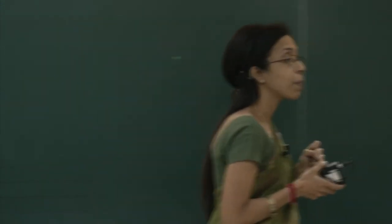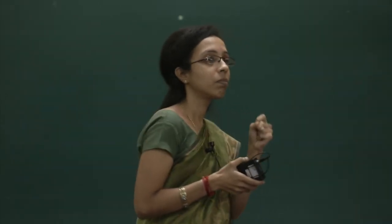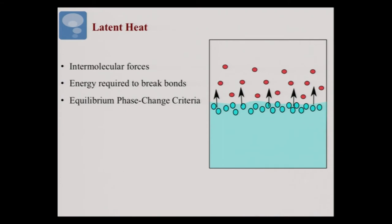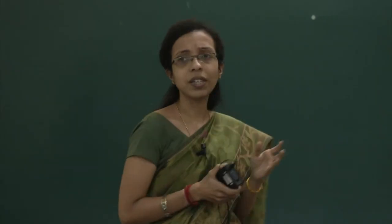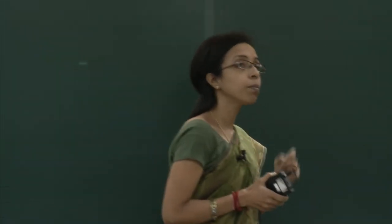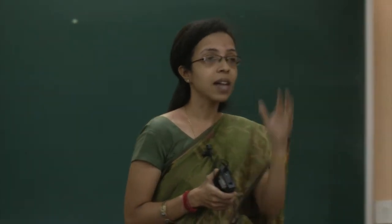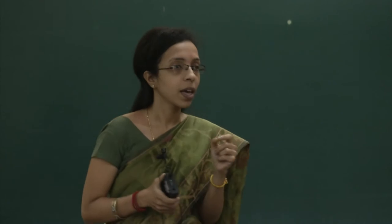If saturation temperature is required for phase change, what about evaporation? A puddle of liquid on the street evaporates without being heated to saturation temperature. The key distinction is that boiling is a bulk phenomenon. In evaporation, one or two discrete molecules on the surface capture enough energy to jump into the vapor phase — it is not an entire mass of coherent liquid being transferred to vapor. To achieve bulk transfer, we need to boil the liquid.